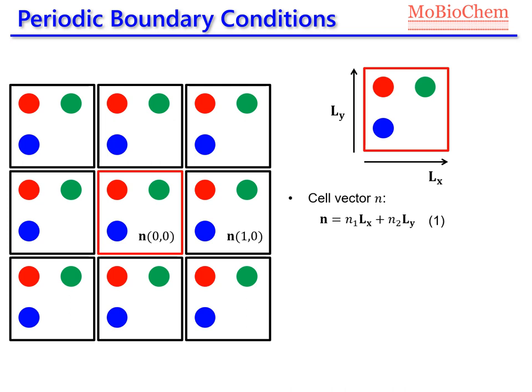We will use the vector (1,0) to represent the cell on the right, (-1,0) to represent the cell on the left of the primary cell, and so on. So we have a vector n which defines the position of each of the replica cells.